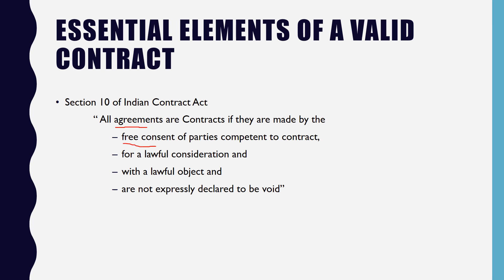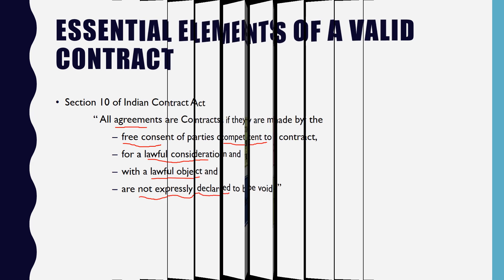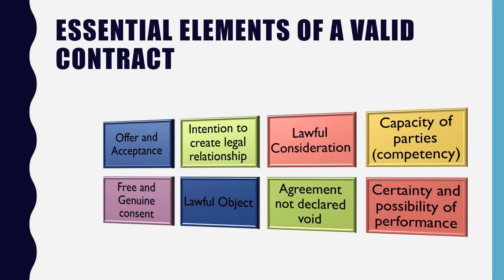The second one is free consent of parties, third is competent to contract, fourth is lawful consideration, fifth is lawful object, and sixth is agreement not expressly declared to be void. Apart from these six elements, there are two more elements: intention to create legal relationship, and certainty and possibility of performance.